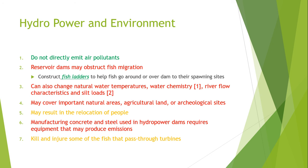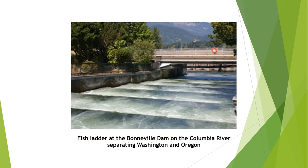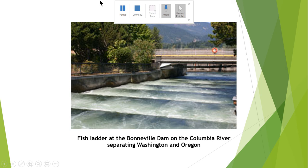Fish passing through turbines can get injured or killed instantly when striking the turbine fins. An example of a fish ladder on a dam on the Columbia River, which separates Washington and Oregon, is used to facilitate salmon fish migration so that they can easily reach their spawning grounds.